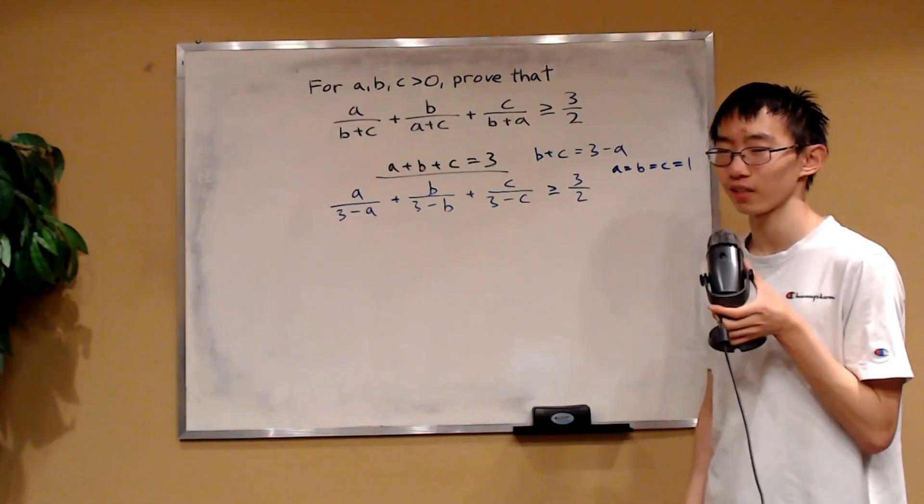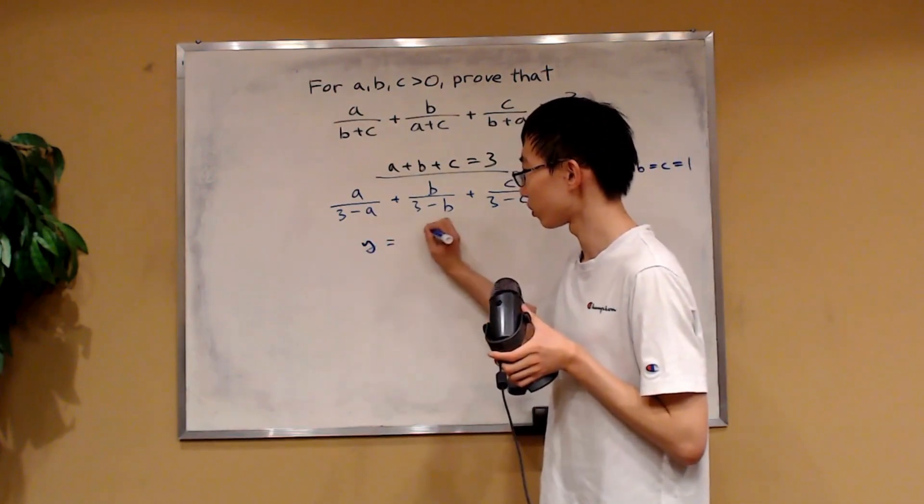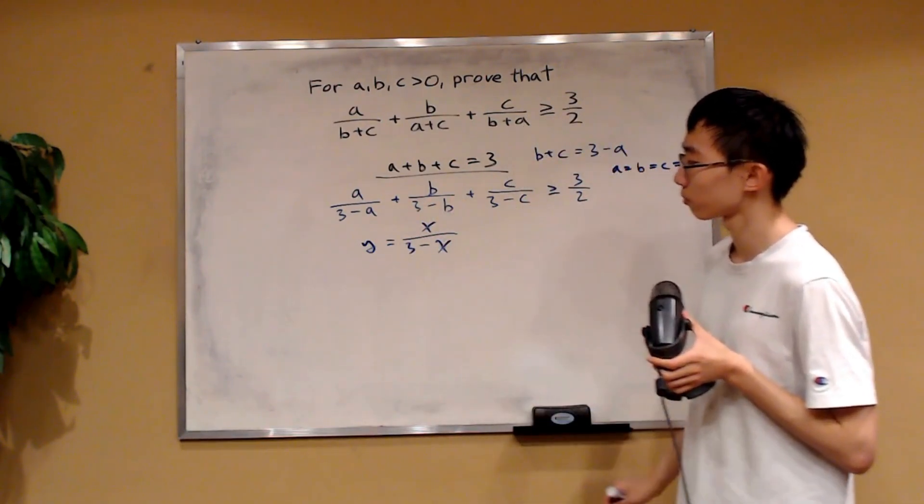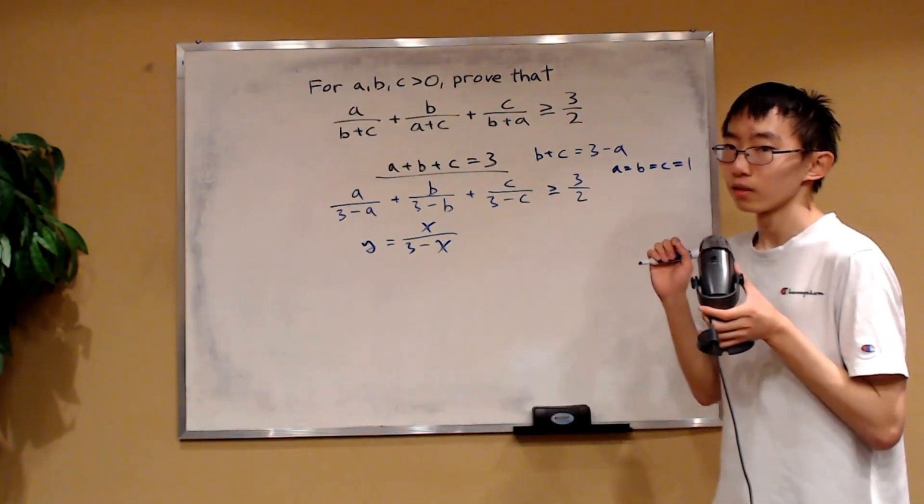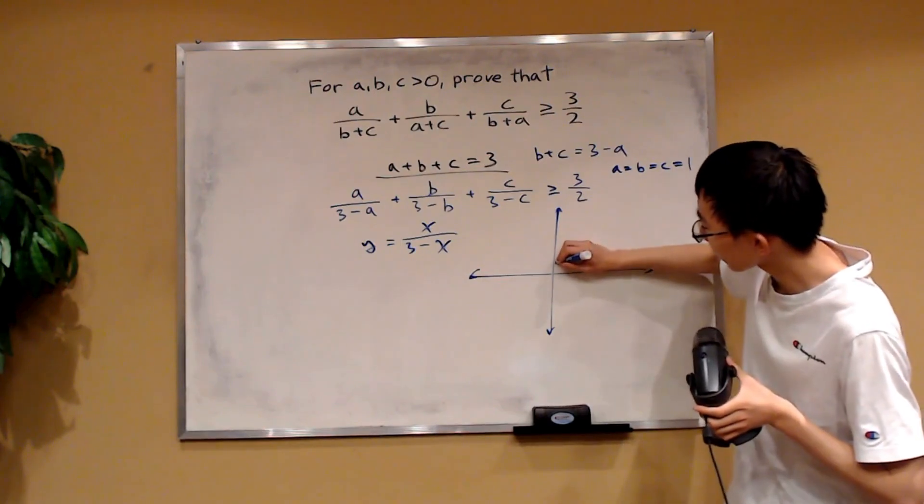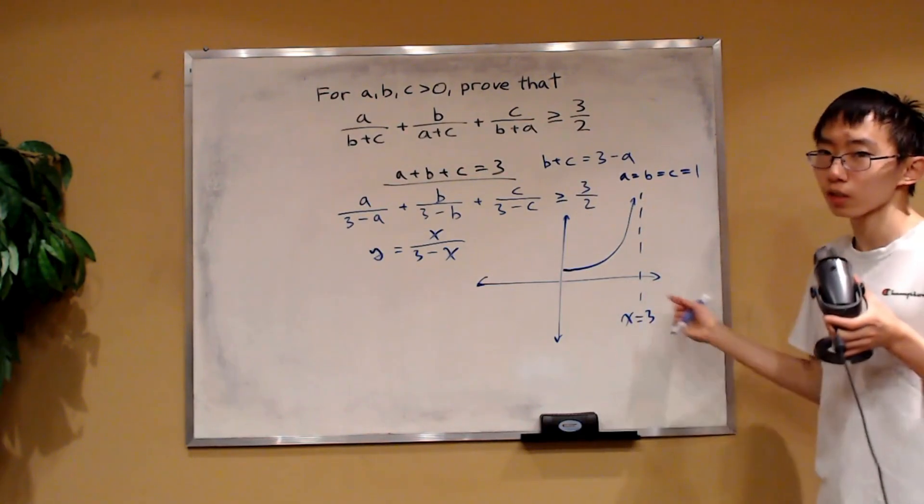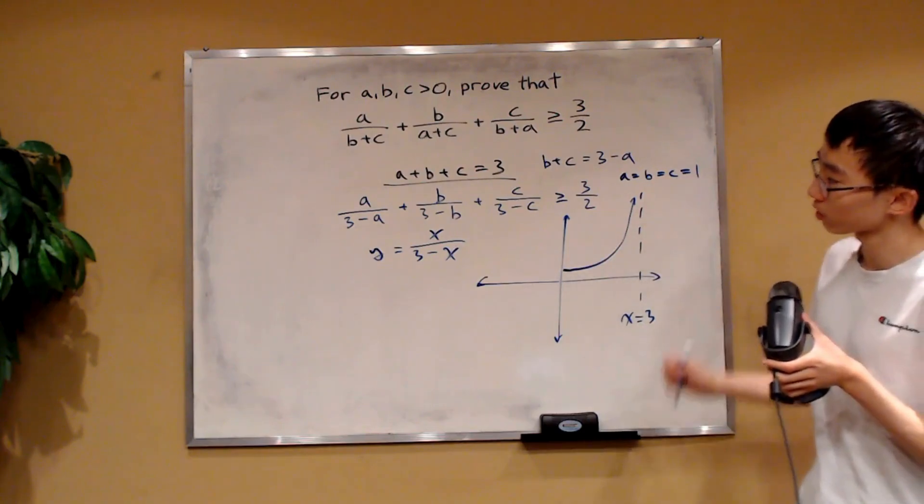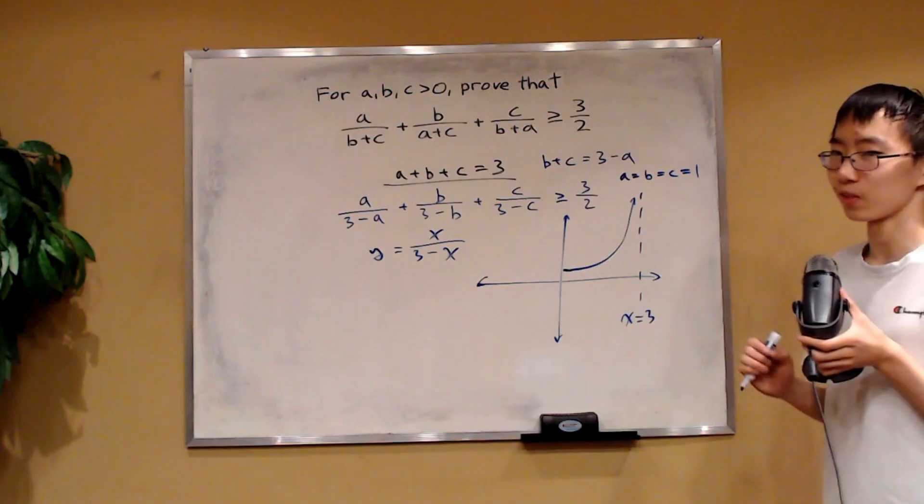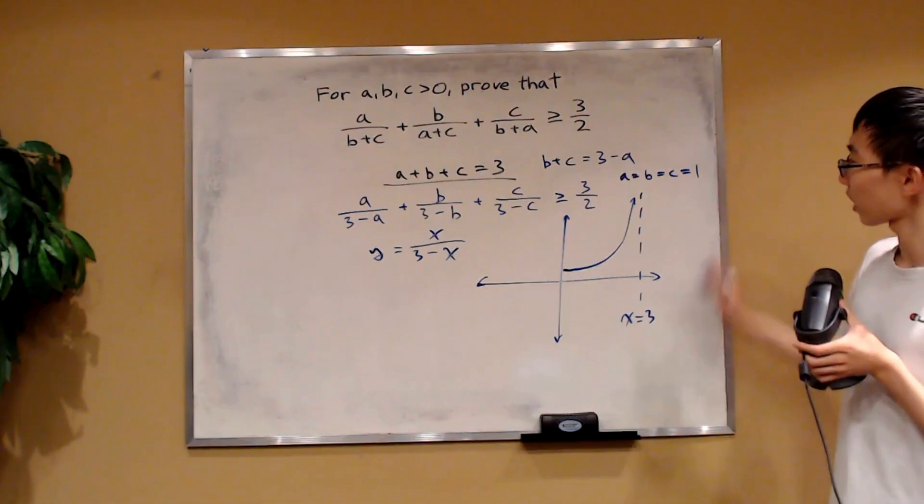Well, this is where the idea of using a tangent line comes in. I want you to consider the graph of Y is equal to X over three minus X. So basically, each of these terms, but I replace the variables with X. Notice that this graph on the XY plane looks something like this. It looks like this for when X is smaller than three. And note that it's only useful to consider this portion because A, B, and C, they sum to three. So they have to be smaller or equal to three. So the only useful part is this portion.